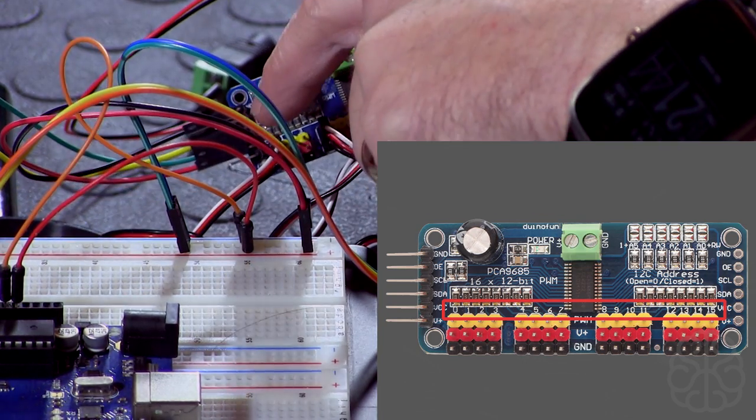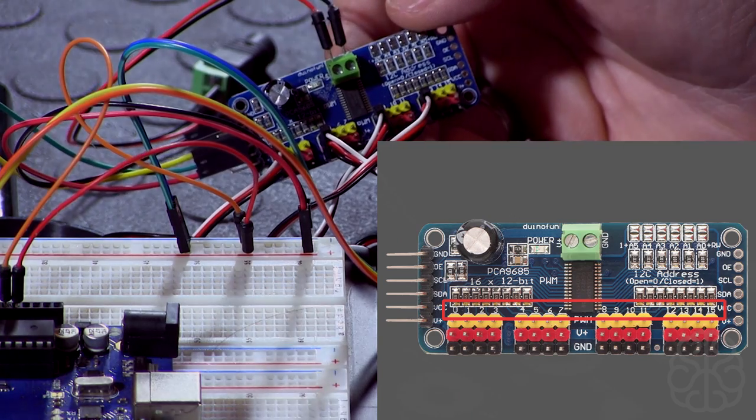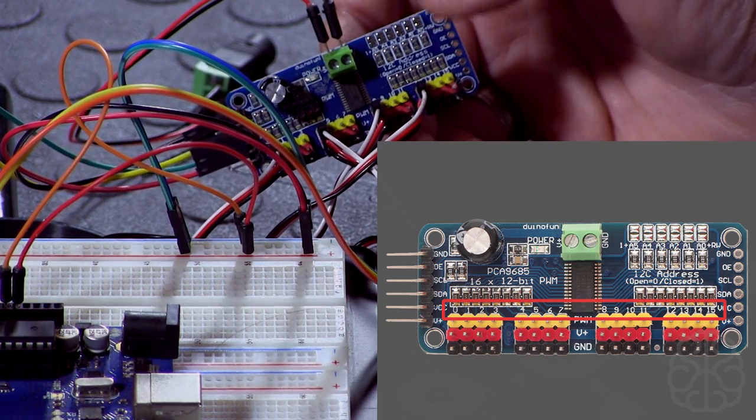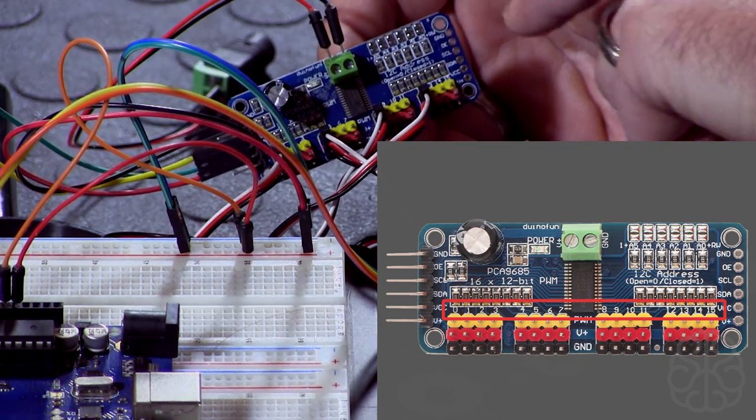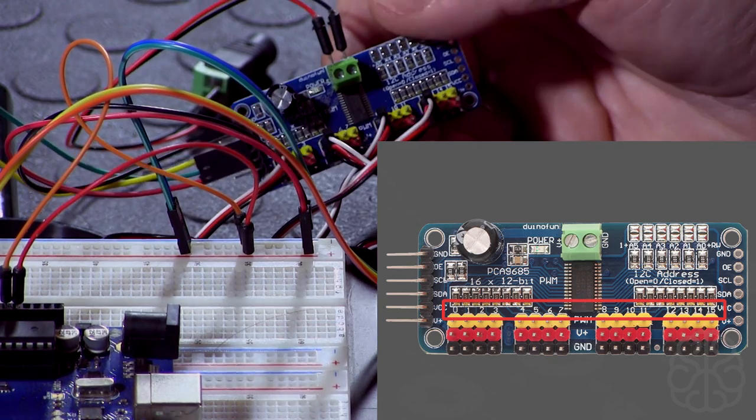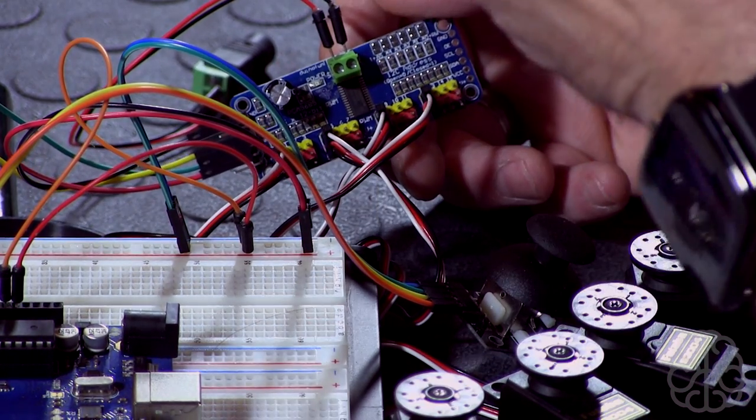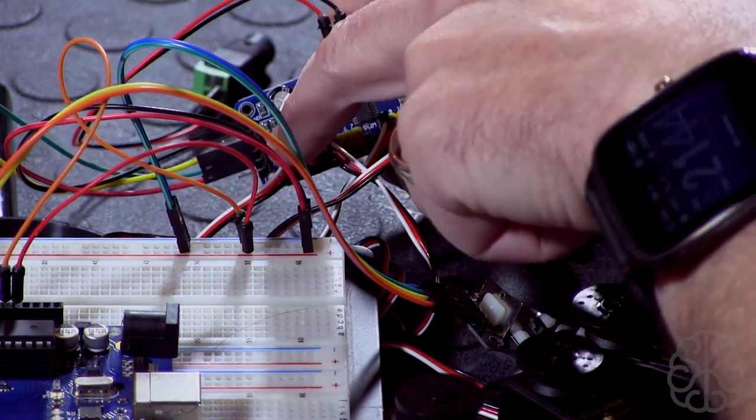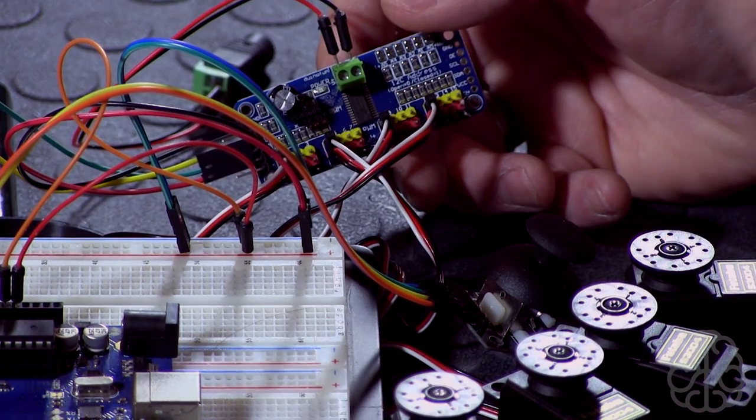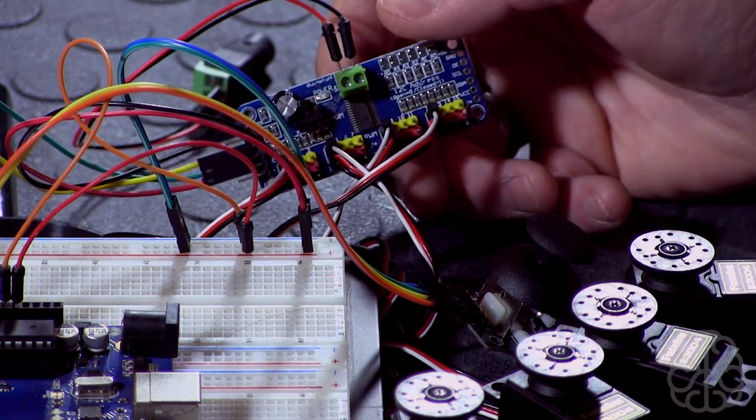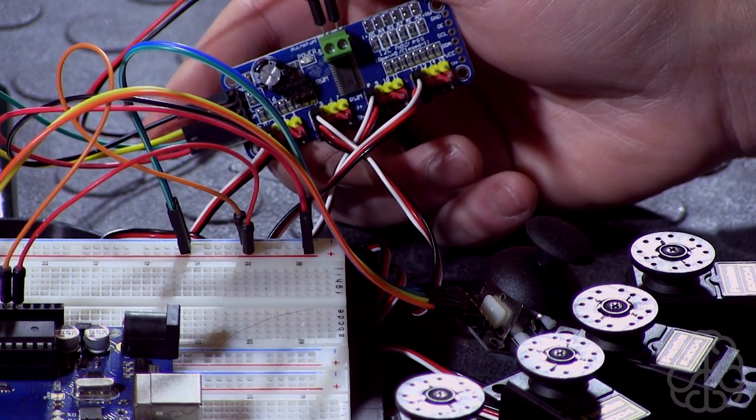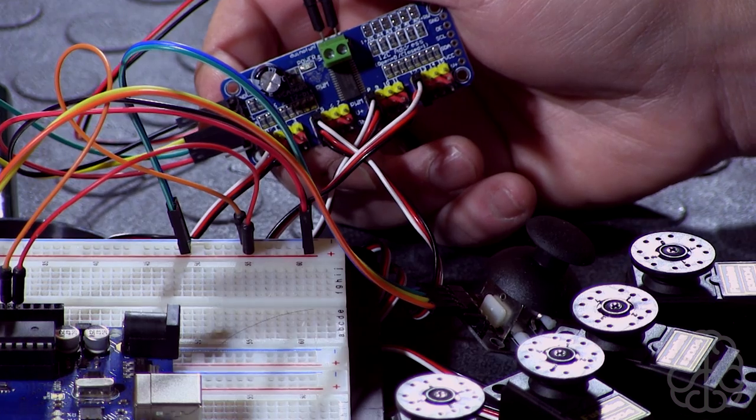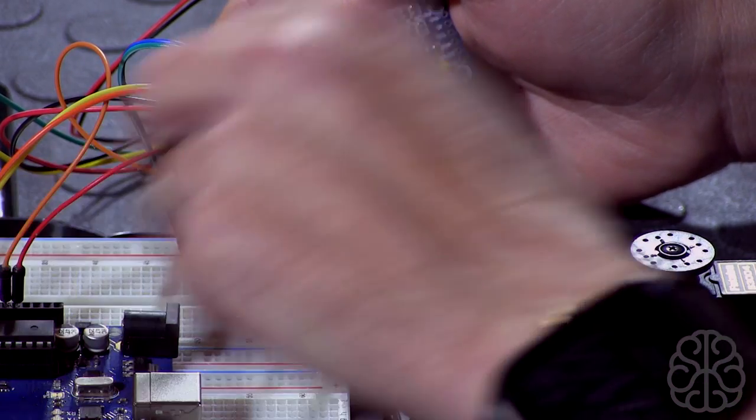There are 16 connections here at the bottom so you could connect up to 16 servos. Also, this board can be used as a PWM controller. Maybe in a future tutorial I'll use this board and light up 16 LEDs with this module, we could fade them low, high, and in between, so up to 16.